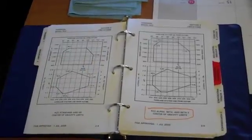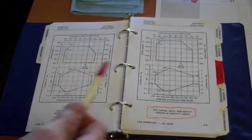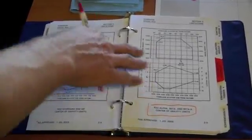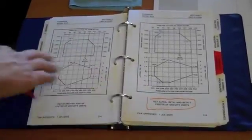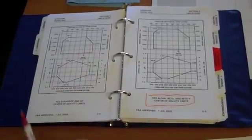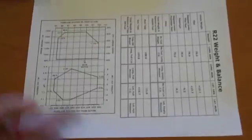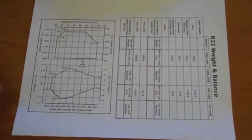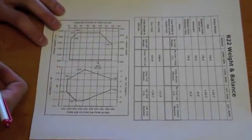Now that we have our CGs and our weights we can then plot the points on our graph which is supplied again in our POH but this time in section 2 of the limitations. We have taken this graph and put it onto a full sheet that allows us to do a whole weight and balance in one with all the math and the graphing at once. So we are just going to go ahead and show the graphing portion.